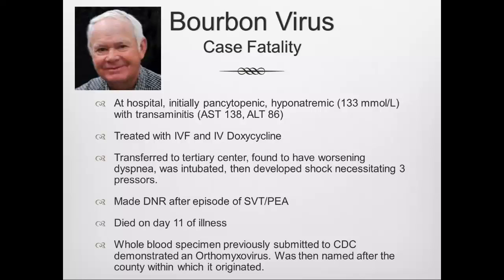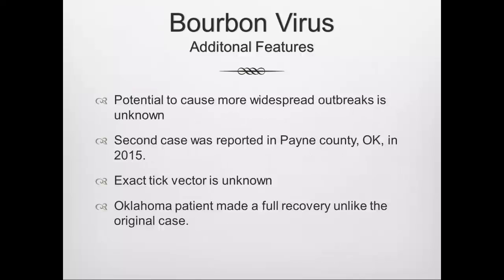Bourbon virus has the potential to cause more widespread outbreaks, though this is unknown. A second case occurred in Payne County, Oklahoma in 2015 — that patient made a full recovery, unlike the original case. The exact tick vector is unknown. Notably, Bourbon virus is unassociated with the bourbon beverage; it was named after Bourbon County, Kansas — a useful trivia point.